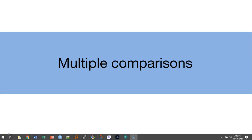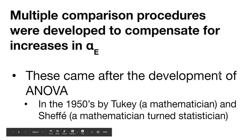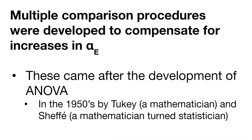This video will discuss multiple comparisons in the analysis of variance. ANOVA was developed in the 1920s and 1930s. After that, people began to look at this idea of multiple comparisons in the 1950s. This was done by Tukey, who was a mathematician, and Scheffé, who was a mathematician turned statistician. These multiple comparison procedures were developed to compensate for increases in our experiment-wise error rate, denoted alpha sub e, as we want to compare different specific means to one another in our data sets.